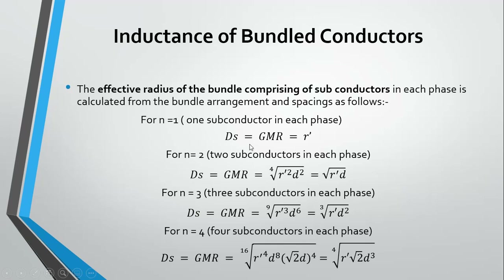To measure inductance in a bundle of conductors, we use r and d, where r is the radius of the conductor and d is the distance between two conductors. The overall D_S used in the formula is modified: for two conductors, D_S = √(r·d); for three conductors, D_S = ∛(r·d²); and for four conductors, D_S = ⁴√(1.414·r·d³).